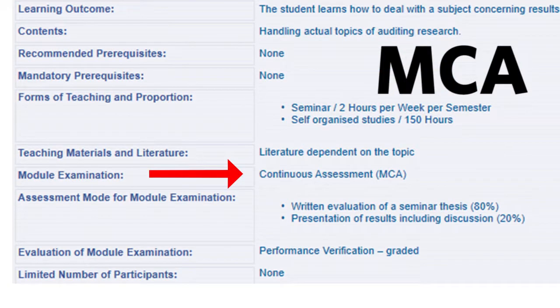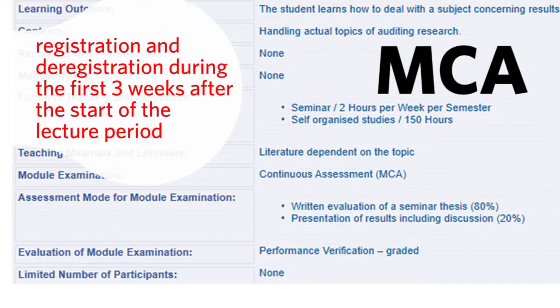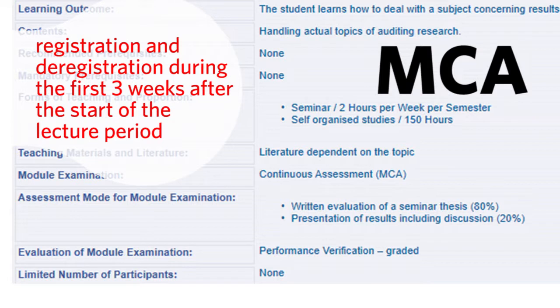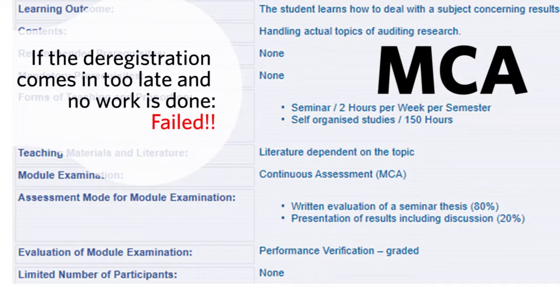MCA stands for Module Continuous Assessment and means that the final grade is made up of different partial performances. This can be, for example, a presentation during the course and a written exam at the end of the semester, or a seminar paper and an exam. In contrast to the MAP modules, MCA modules require you to register for the exam within the first three weeks of the start of the lecture period and to cancel if you decide not to complete them. If you do not cancel your registration for an MCA module within the first three weeks, you must complete the module and the examination. Otherwise, the module must be assessed with a grade of 5 — failed.